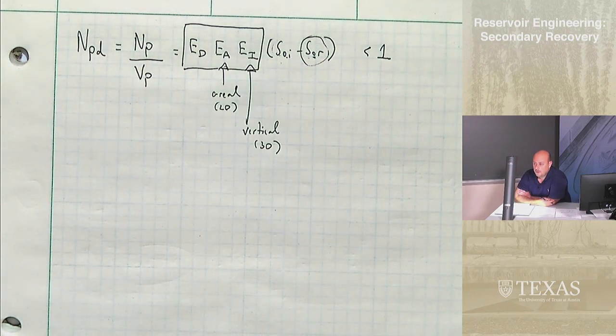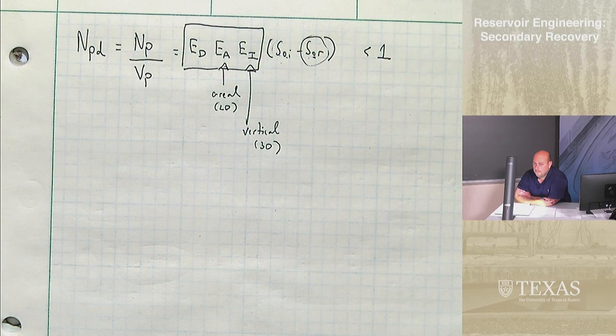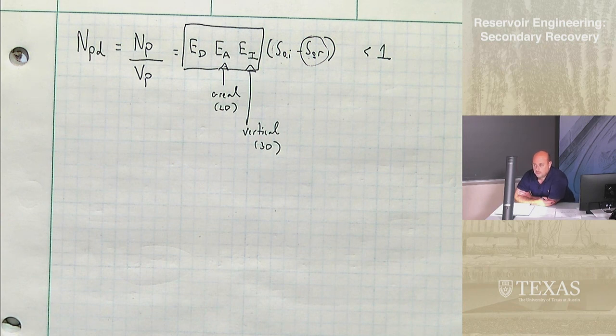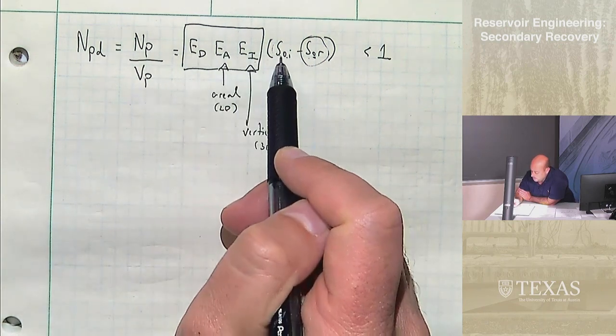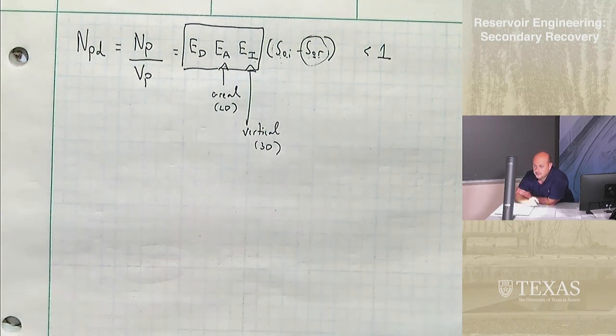These things are static. This is your initial saturation. This is the theoretical value that you would get if you injected tons and tons of pore volumes of water. These three are time dependent. Initially they're small. But as time goes on, they approach 1. So if you were to go long enough times, all these would be 1 and then NPD would be SOI minus SOR.